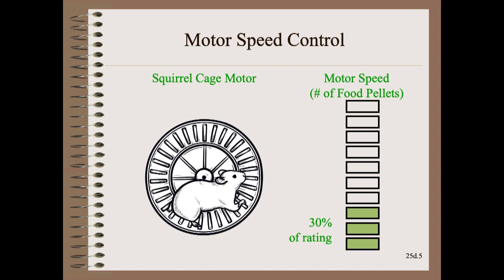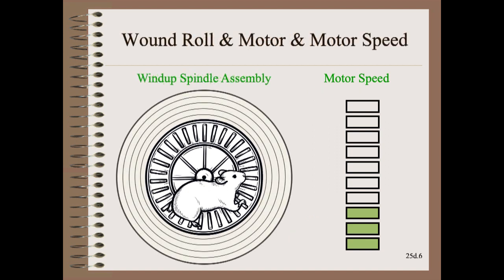The motor's speed is controlled quite simply here by the number of food pellets in front of our squirrel. Here we show a speed of 30% of motor rating. For simplicity, we wind right on top of the squirrel cage motor. In the real world, of course, we will have gearboxes, coupling, and other mechanicals which will change the gear ratio and add friction. But those are details that are easy enough to figure out.